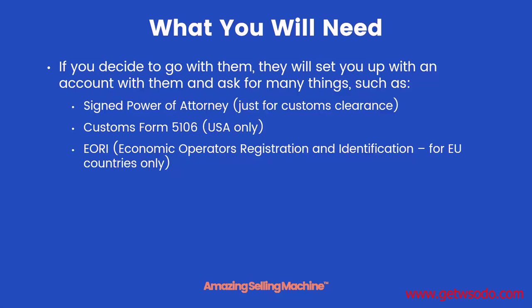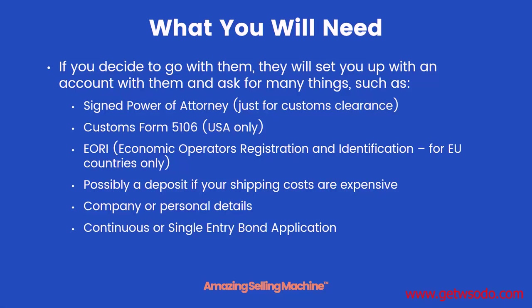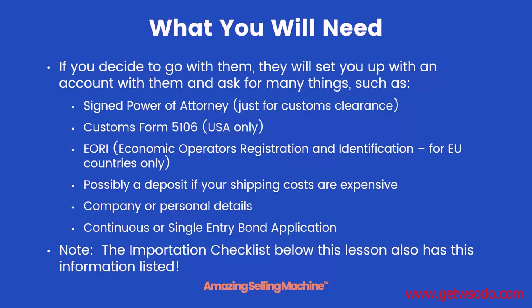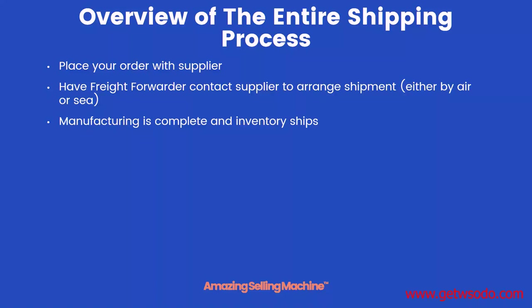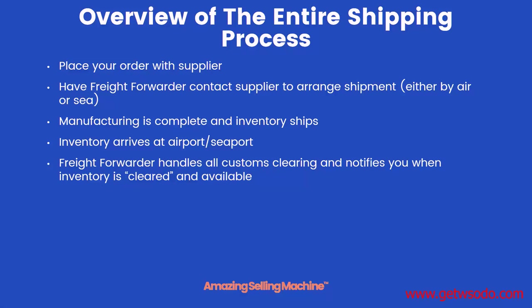Once you accept their quote, they'll set you up with an account and ask for additional things such as a signed power of attorney — just for clearing your products through customs — a customs form 5106 (USA only), or an EORI (Economic Operators Registration and Identification) for EU countries only. They may also want a deposit if shipping costs are high, your company or personal details, and information about a continuous or single-entry bond application, which they'll explain the difference between.